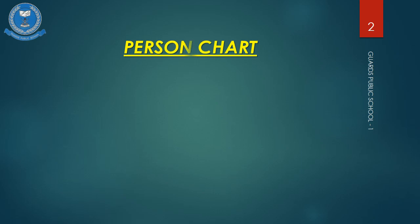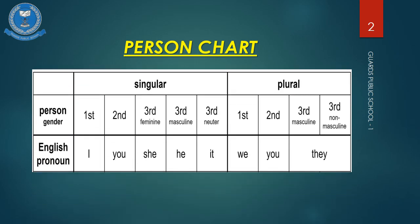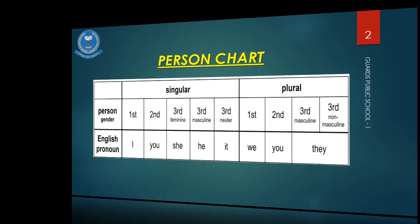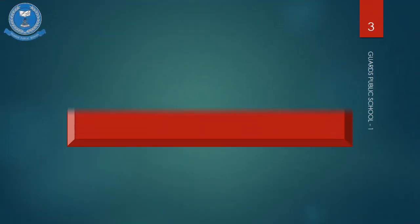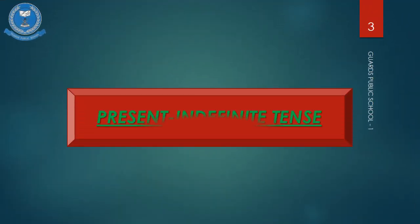Students, you can see the chart which is showing the first person, second person, and third person and their singular and plural forms. Let's move to the Present Indefinite Tense translation.